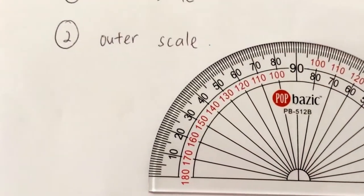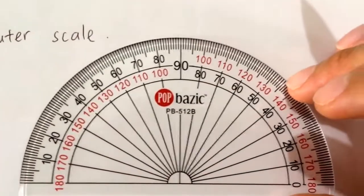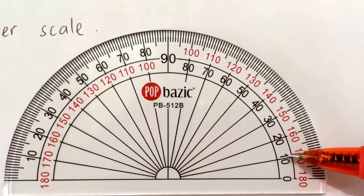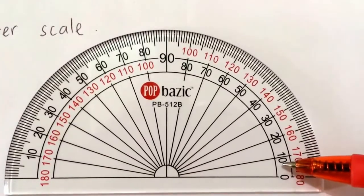The inner scale is slightly more difficult. Zero is here, this is 10. How do you read the numbers in between? Let's say I want to read number 6.